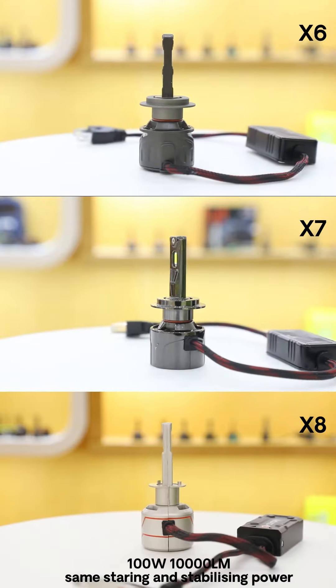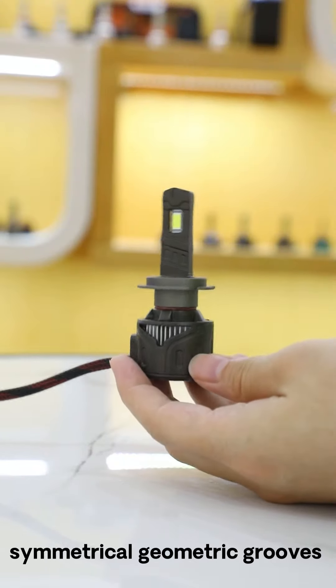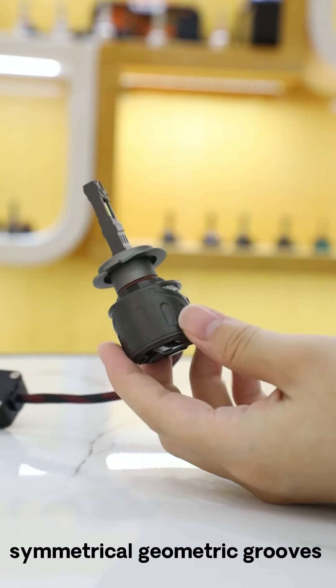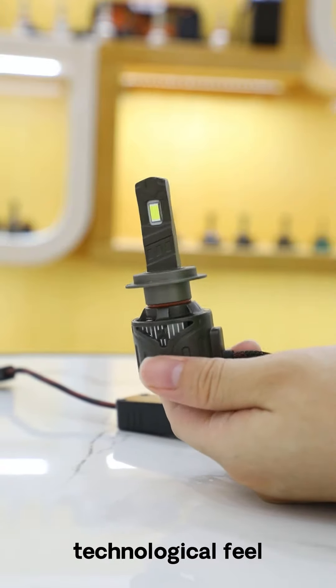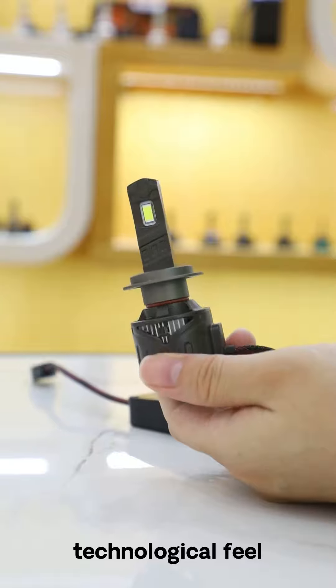We can see a clear difference in their appearance. Both X6 and X7 headlights have a great exterior, but the patterns on their housing are different, with the X6 housing having symmetrical geometric grooves and cutouts for a more technological feel.